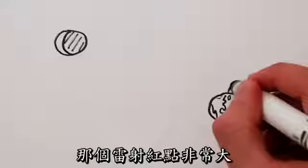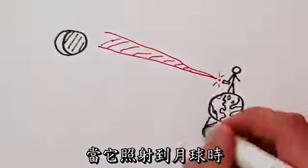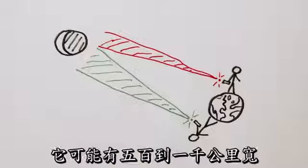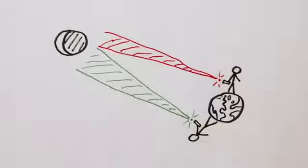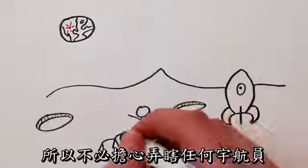And as you may have guessed, the red dot of a laser pointer is pretty big by the time it gets to the moon. Depending on your laser, it might be 500 or 1,000 kilometers across, so don't worry about blinding any astronauts.